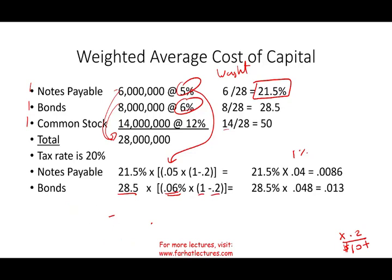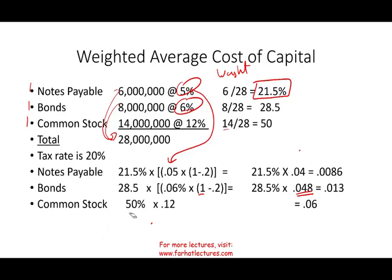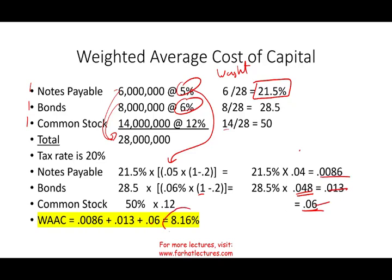So managers don't receive an arbitrary required rate of return — we use WACC, which is based on our actual financing, coming to 8.16%. Usually in a managerial or cost accounting course, you don't have to compute WACC yourself — it will be given to you — but it's important to understand what it is and how it's derived.